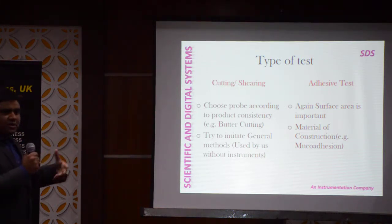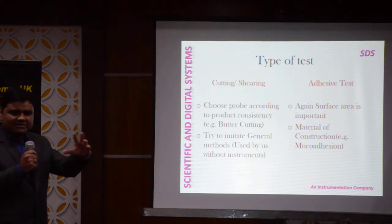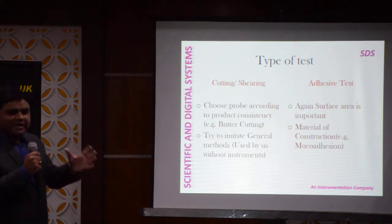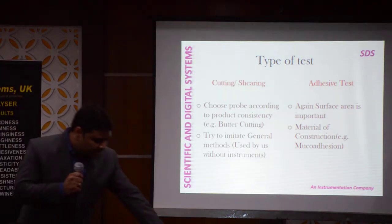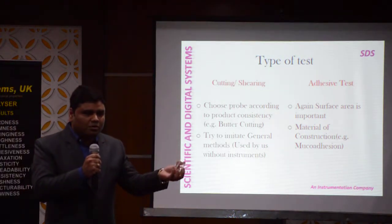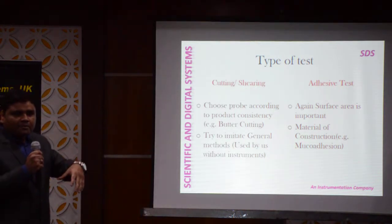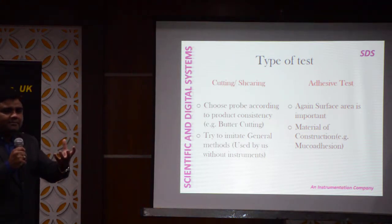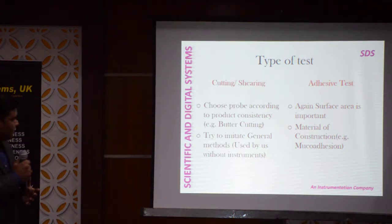The material of construction also matters — questions were raised in the previous session about delrin versus stainless steel, and some probes made of perspex. Perspex is a material similar to glass but less brittle. Delrin is a kind of teflon-like material which can be used for stickiness — it is a smooth probe that will not cut the surface, it will smoothly glide through it. And then there is stainless steel, which you all know.